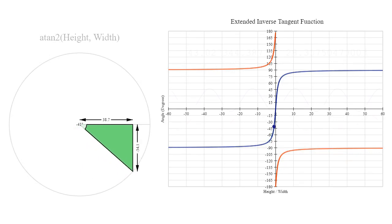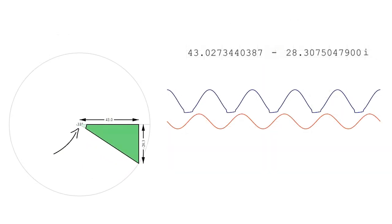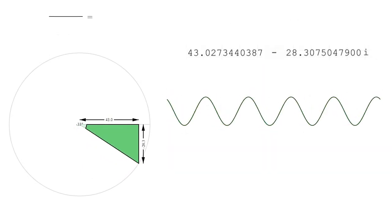Therefore, the phase of the sinusoid we have been looking at, can be calculated by dividing the height of the triangle, minus 28.3, by the width, 43.0, and then taking the inverse tangent of the result, giving us an angle of minus 33 degrees.